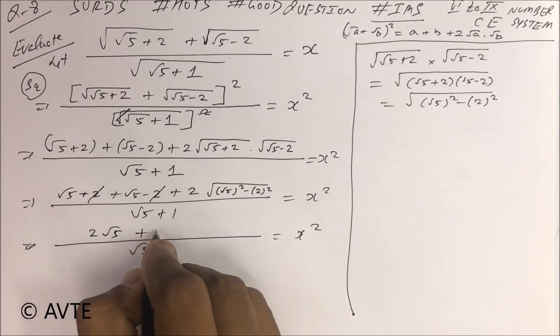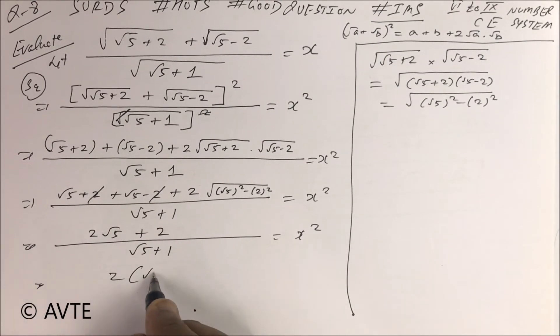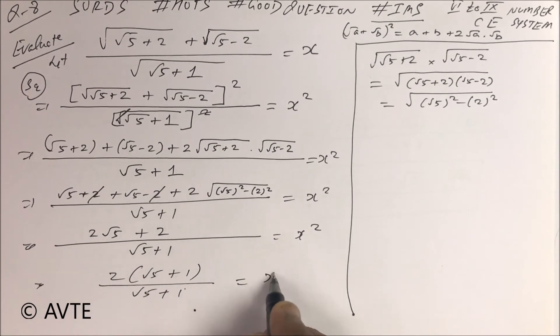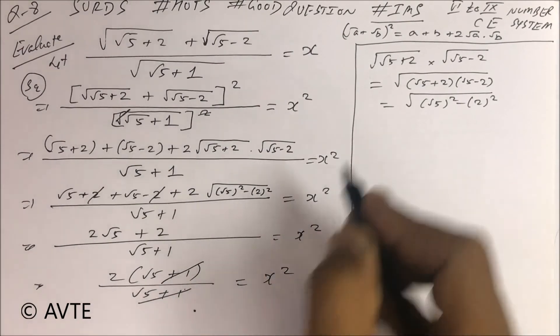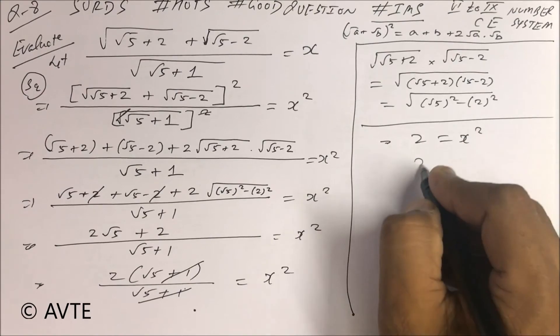That is plus 2√1, that is 2. So now take 2 common, √5 + 1, √5 + 1 equals x². This will cancel, so 2 equals x².